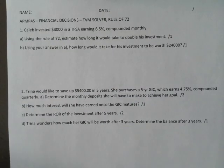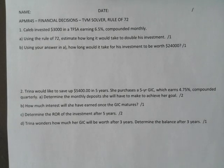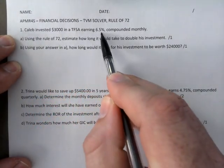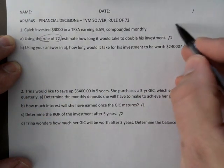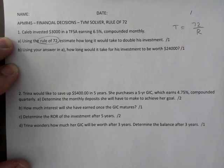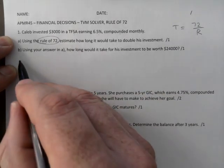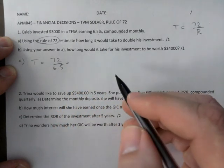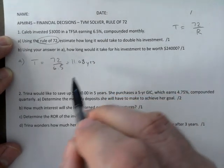I'll go over this, and remember you're still learning and you want to get as much additional knowledge as you can. Caleb invested $3000 in a TFSA earning 6.5% compounded monthly. Using the rule of 72, that should be on your calculator. Time will just be 72 divided by 6.5, leave it like that, and that gives you 11.08 years.